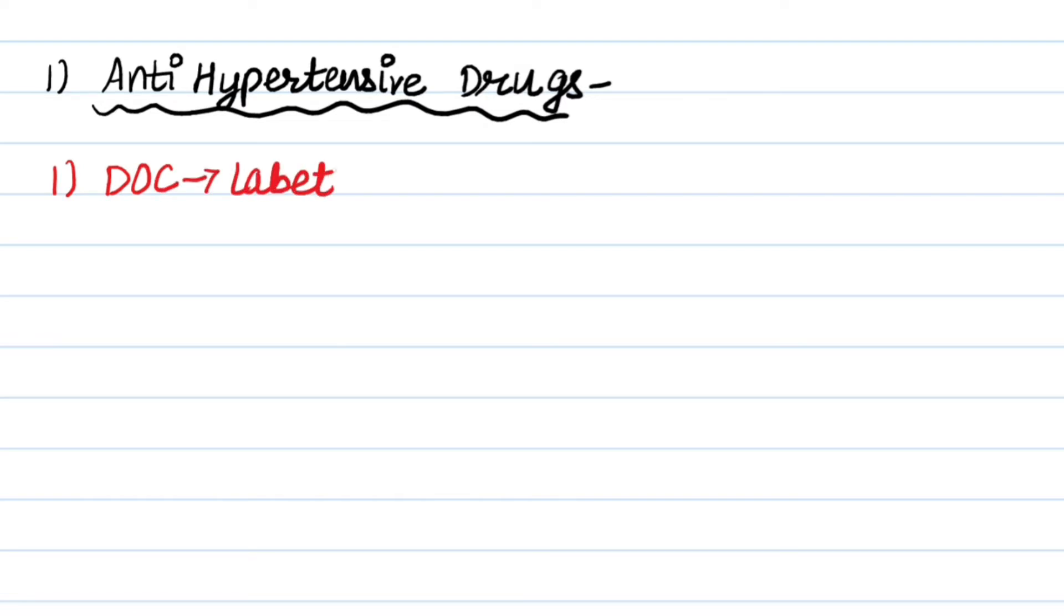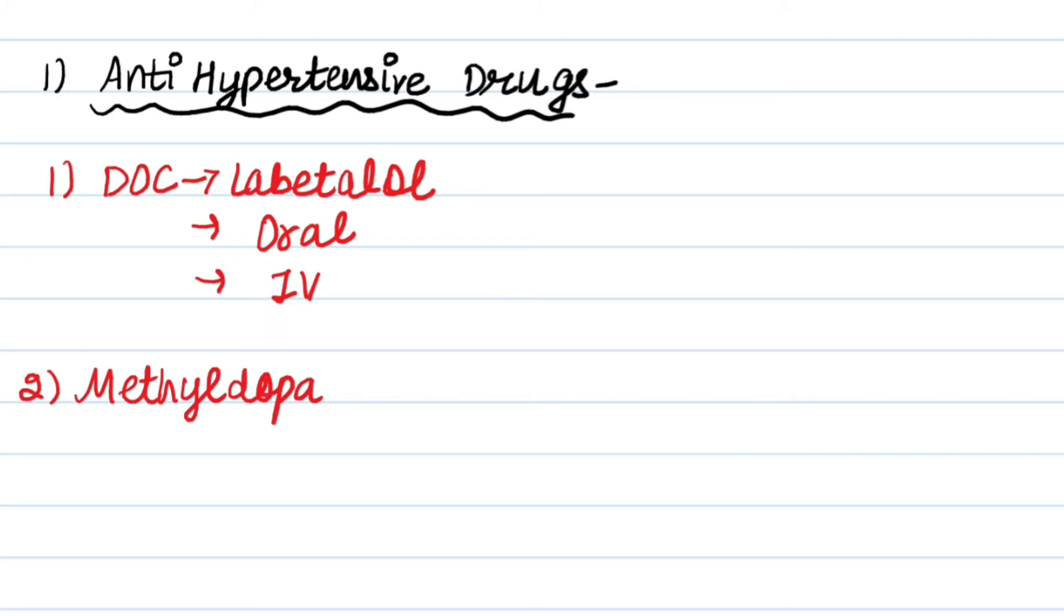First group of drug is antihypertensive drugs. Which drugs we can use during pregnancy and lactation? First one, drug of choice, is labetalol, a beta blocker, both in routine hypertension in pregnancy as well as hypertensive emergency in pregnancy. We can give it orally in routine hypertension and IV in hypertensive emergency. Second drug of choice is methyldopa, drug of choice according to the WHO guidelines.